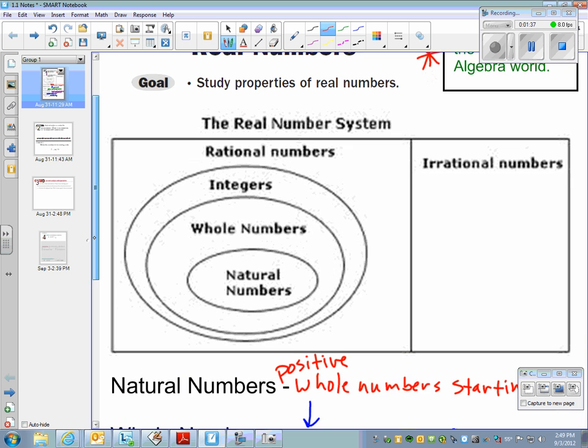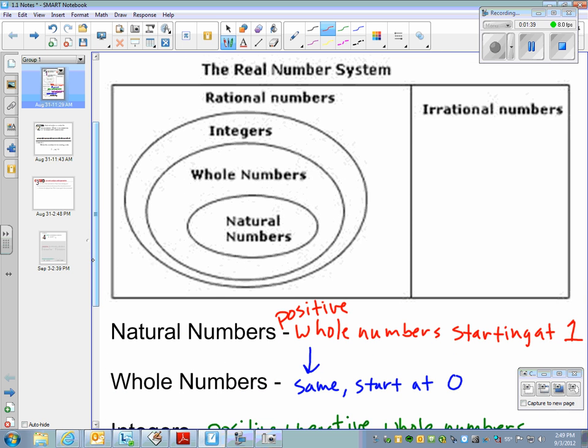The Real Numbers System has lots of different kinds of numbers. Our first one is natural numbers. Natural numbers are positive whole numbers starting at 1. So examples of natural numbers would be like 1, 2, 3, keep going up, 4, 5, 6, 7, 8, whatever. That's where you start off, like even when you're a little kid, when you first start saying numbers, you usually start with 1. You don't start with 0.